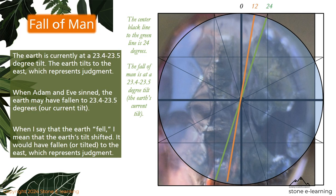The earth is currently at a 23.4 to 23.5 degree tilt. The earth tilts to the east, which represents judgment. When Adam and Eve sinned, the earth may have fallen to 23.4 to 23.5 degrees — our current tilt. The earth's tilt shifted; it would have fallen or tilted to the east, which represents judgment.